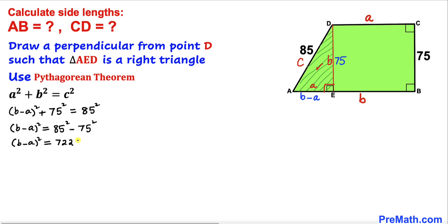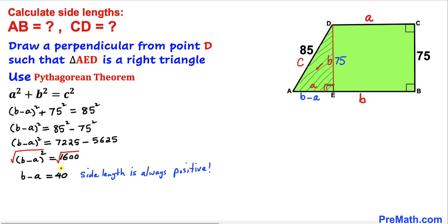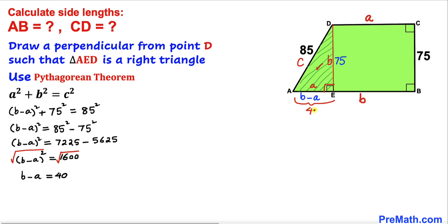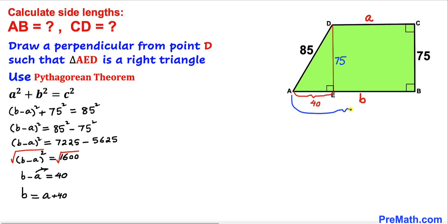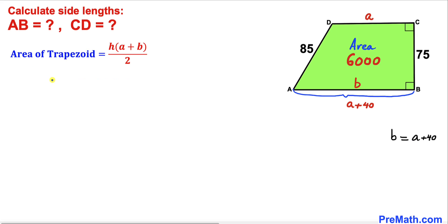Taking the square root of both sides, we get b minus a = 40. We keep the positive value since side lengths are always positive. Therefore AE is 40 units. Moving the negative a to the right-hand side gives us b = a + 40. So the whole length AB equals a + 40.